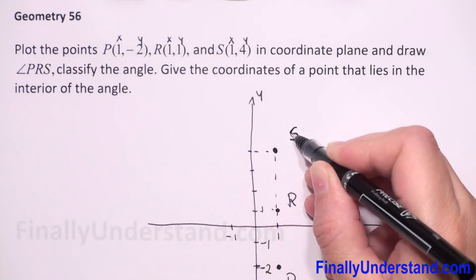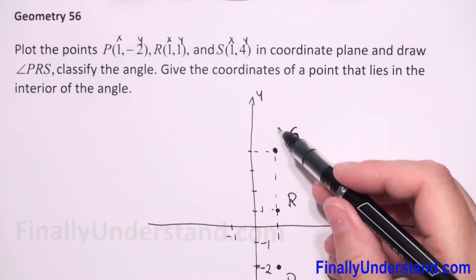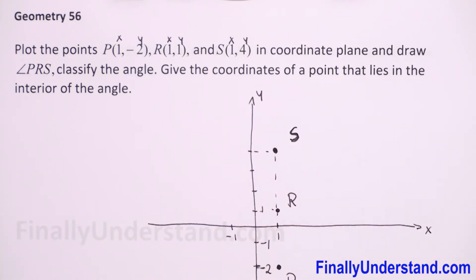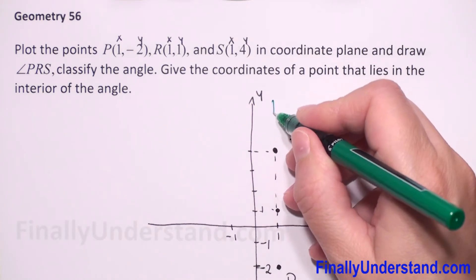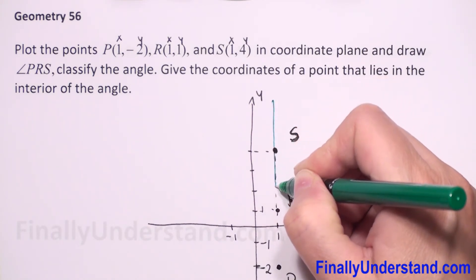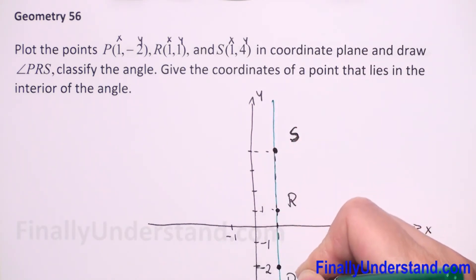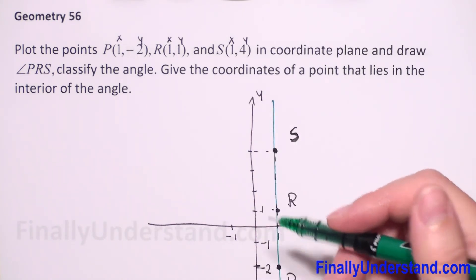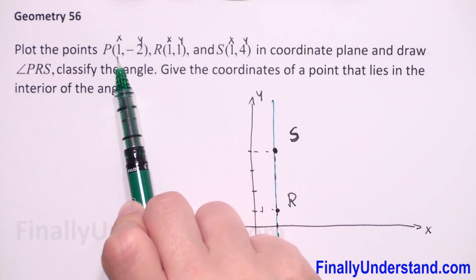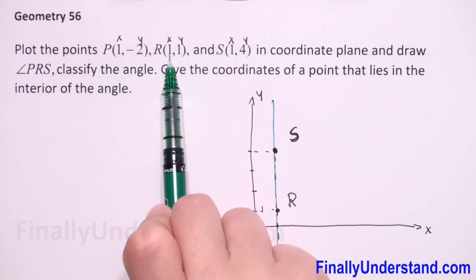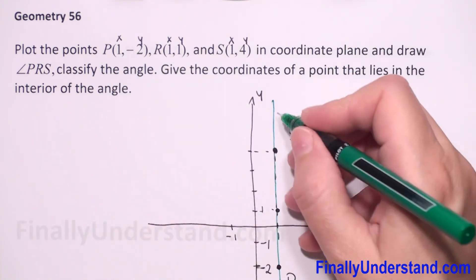We see that these three points are on a line which is parallel to the y-axis, because the first coordinate x is one, one, one - they're all one. So we got a straight line.